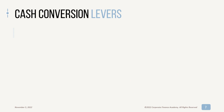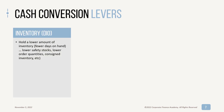So what are your levers? For inventory, you can hold a lower amount of inventory — fewer days on hand, lower safety stocks, lower order quantities and order more frequently. You could also use consigned inventory where you don't actually take title or pay for that inventory; the terms don't start until you pull it, but it's actually located on site.